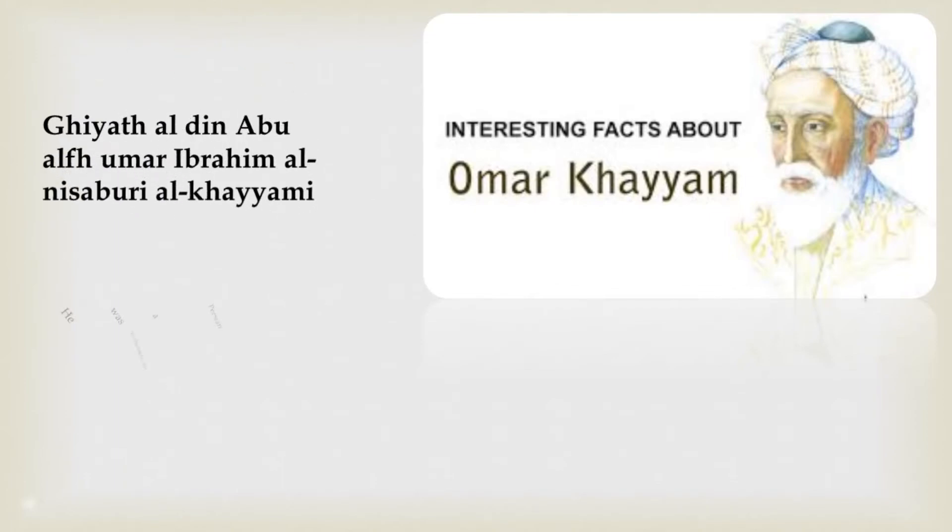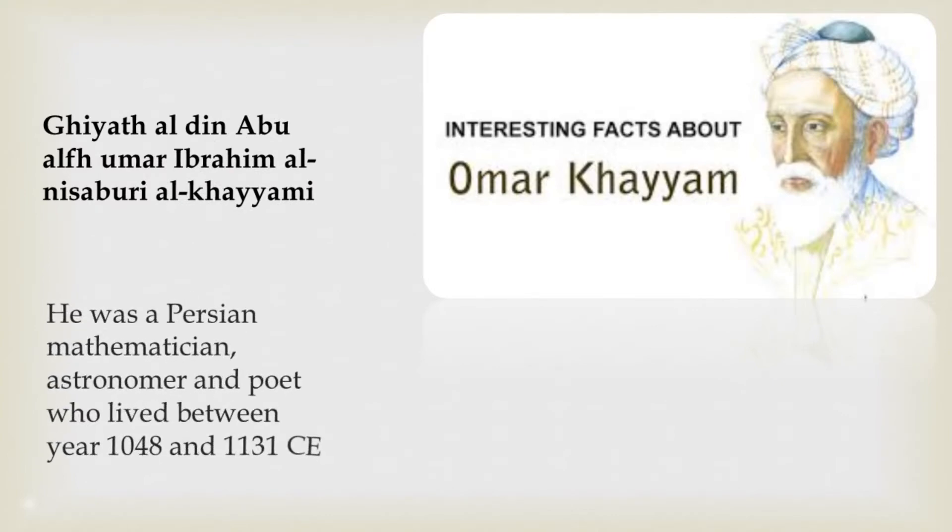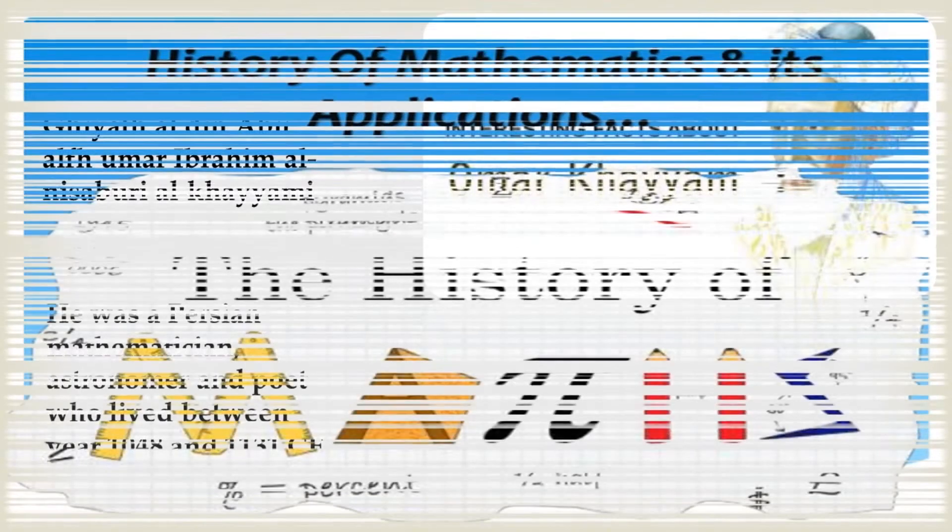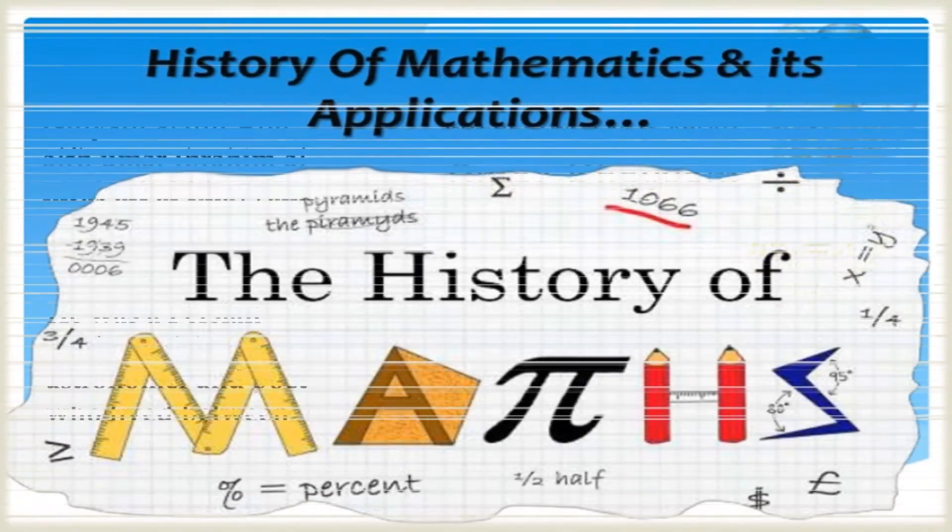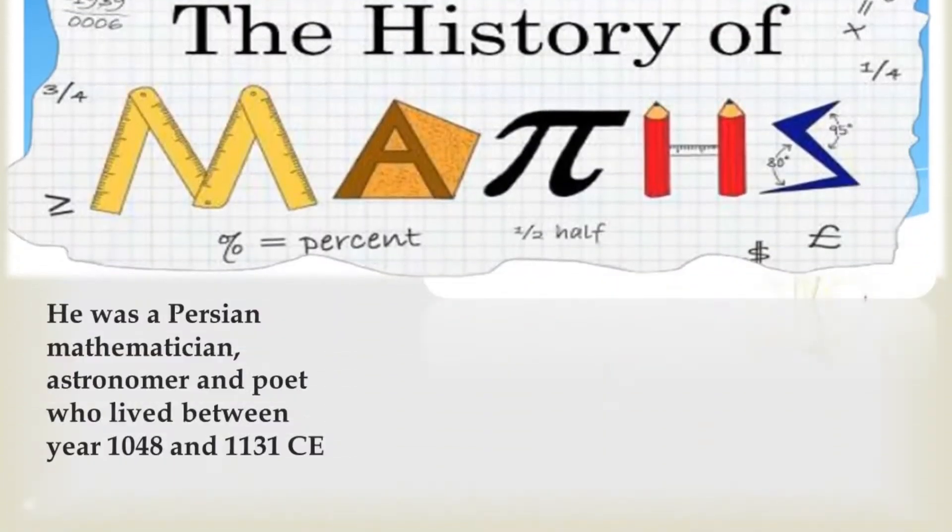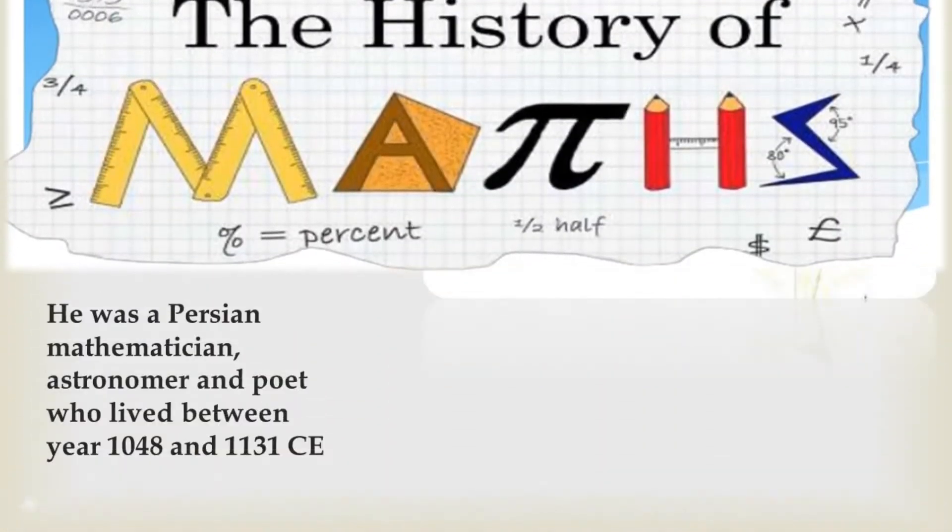He lived between the year 1048 and 1131 CE. He was born in a city of Iran which was formerly known as Persian Nation.